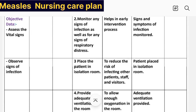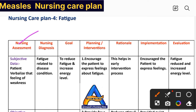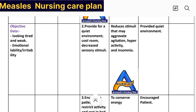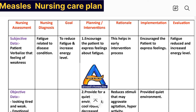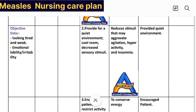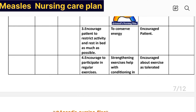Care plan number four: fatigue. Subjective data: patient verbalizes feeling of weakness. Objective data: patient looks tired and weak, emotional lability and irritability noted. Nursing diagnosis: fatigue related to disease condition. Goal: to reduce fatigue and increase energy level. Intervention number one: encourage the patient to express feelings about fatigue. Rationale: helps in early intervention process. Implementation: patient encouraged to express feelings.